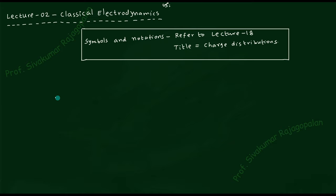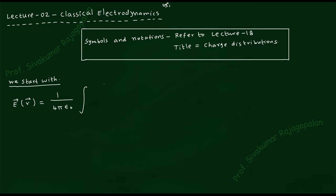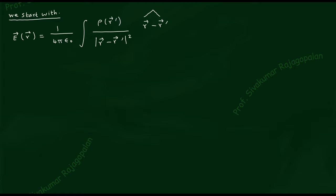We are going to write down the expression for the electric field due to an arbitrary charge distribution. The electric field E(r) equals 1 over 4πε₀ times the integral of ρ(r′) divided by |r − r′|² multiplied by the unit vector (r − r′)-hat, where the hat symbol represents the unit vector. This gives the electric field for any kind of charge density ρ(r′).